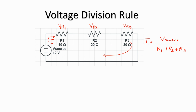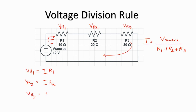Because this is a series circuit, all the resistors are connected end to end, so the total resistance of the circuit would be R1 plus R2 plus R3. We can now find out Vr1 by applying Ohm's law. Vr1 would be I into R1. Similarly, Vr2 is I into R2 and Vr3 would be I into R3.